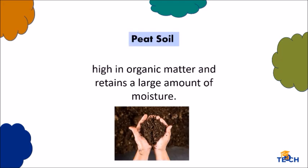Your fourth type of soil is the peat soil. It is high in organic matter and retains a large amount of moisture. This type of soil is very rarely found in a garden and is often imported into a garden to provide an optimum soil base for planting.